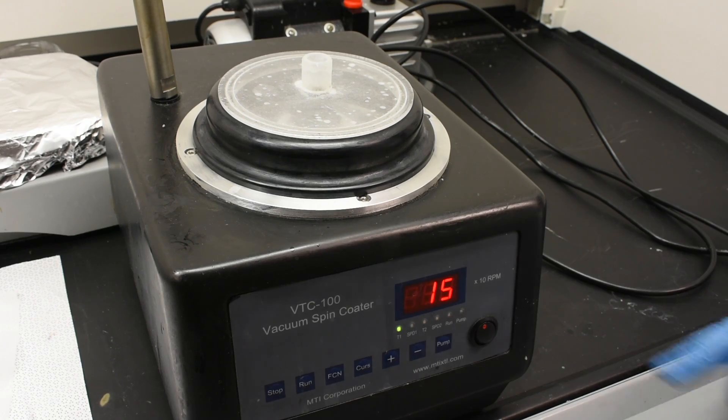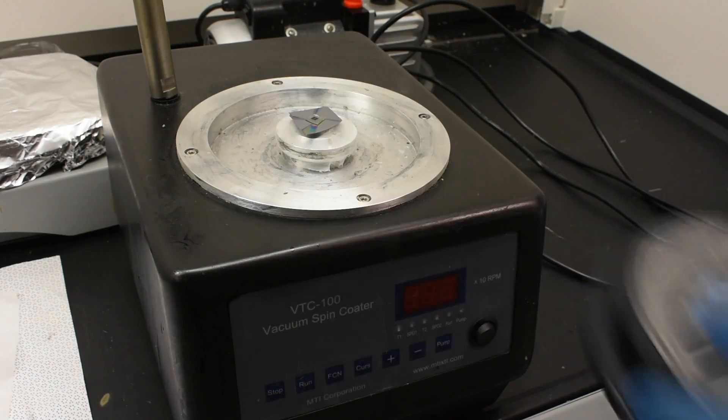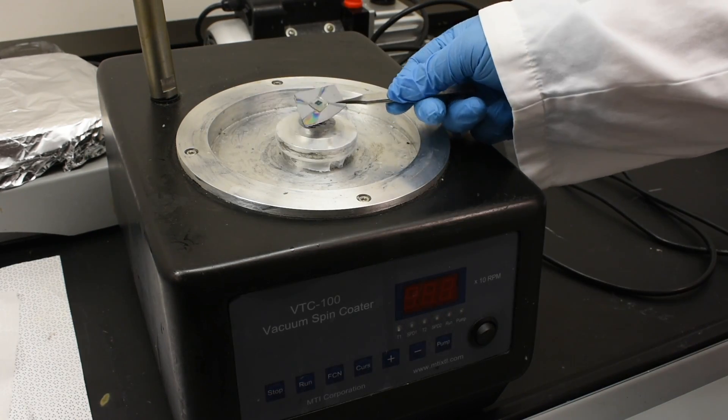The sample is removed from the spin coater and allowed to dry overnight, typically 12 to 18 hours.